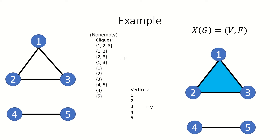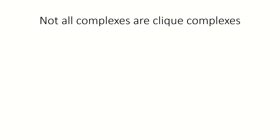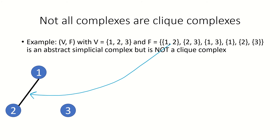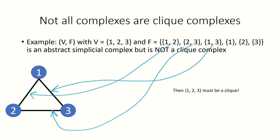It's important to note that not every abstract simplicial complex is the clique complex of some graph. As an example, the abstract simplicial complex with the following faces and vertices cannot be the clique complex of any graph. Because if we have a graph on the vertices 1, 2, and 3, our complex being a clique complex would imply that {1,2}, {1,3}, and {2,3} are all cliques, which together would mean that {1,2,3} is a clique in the graph. Yet {1,2,3} is not a face in our complex, meaning our complex cannot be a clique complex.